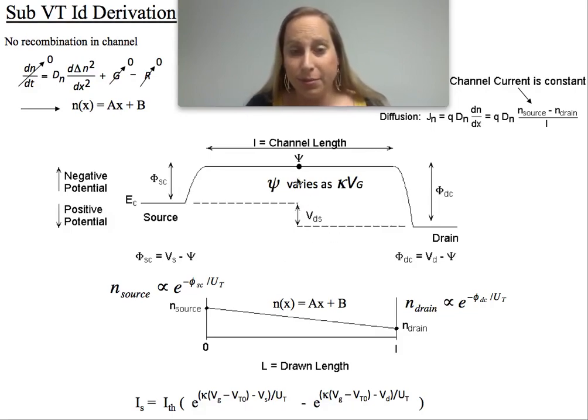We will typically talk about a band diagram here, from the source and the surface potential to the drain. And very easily we will get expressions like you see at the bottom for the source current. That will be an exponential function of the gate voltage, source voltage, gate voltage, and drain voltage.